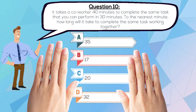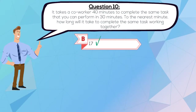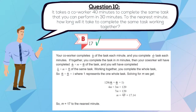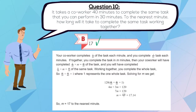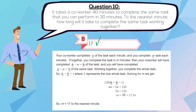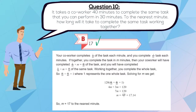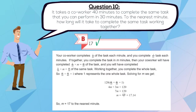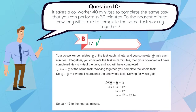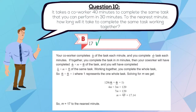The correct answer is B, 17. Your coworker completes 1/40th of the task each minute, and you complete 1/30th of the task each minute. If together you complete the task in M minutes, then your coworker will have completed M over 40 of the task, and you will have completed M over 30 of the same task. Working together, you complete the whole task, so M over 30 plus M over 40 equals 1, where 1 represents the one whole task. Solving for M, we get M equals 17 to the nearest minute.